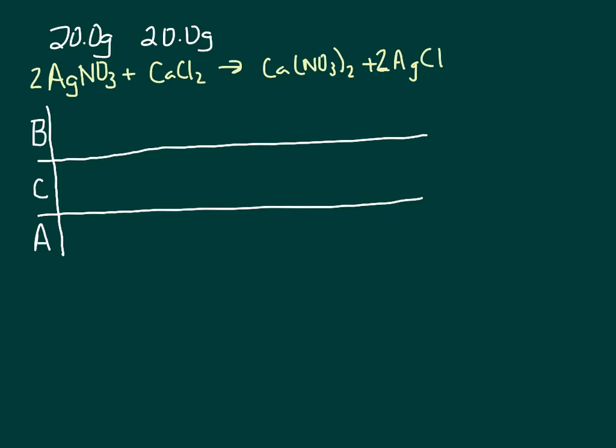And we're starting with 20 grams of each of these, and we're going to do some calculations to put them into the BCA table. Our goal is that we want to find out how much of the products are going to be formed. Here are the products right here. We want to know how much do we end up with.